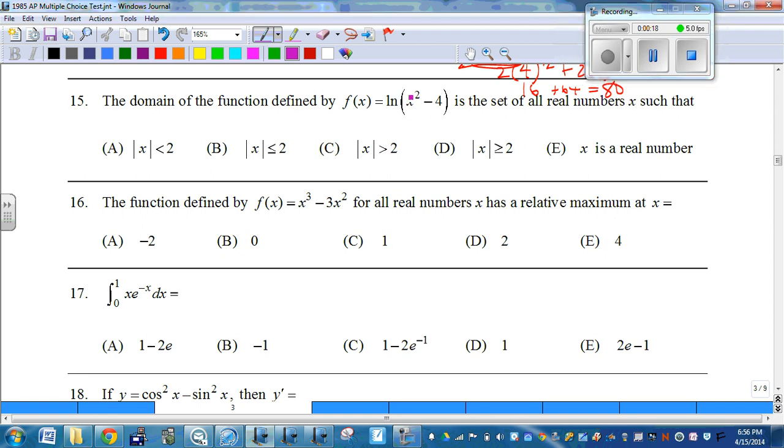What do we know about natural log and what we can and cannot take the natural log of? Can't take the natural log of negative numbers and we can't take the natural log of 0, right? It has to be positive. So that means x squared minus 4 has to be greater than 0. So x squared has to be greater than 4.